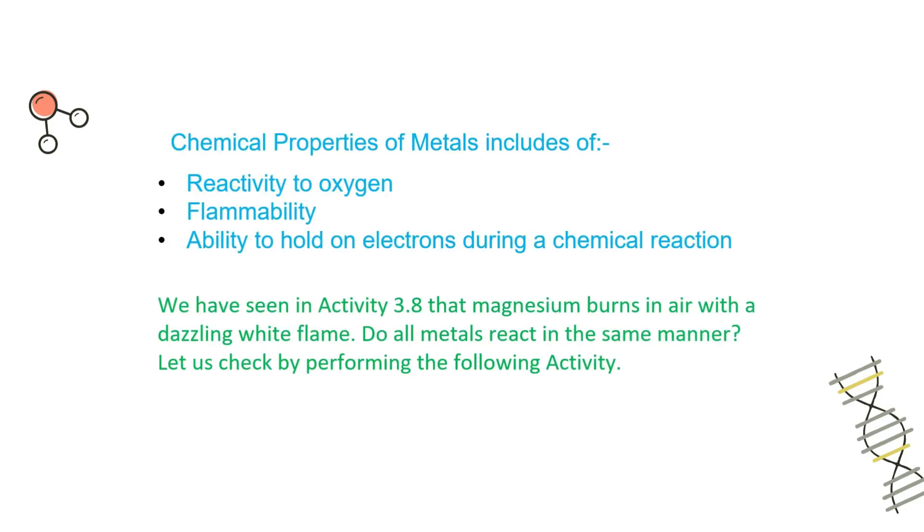Now chemical properties of metals include reactivity to oxygen, flammability, and ability to hold electrons during a chemical reaction. Reactivity to oxygen depends on how a metal reacts with oxygen, does it take a lot of time, does it combine quickly with it, or are there any by-products during the reaction. Flammability means if a metal is inflammable or non-inflammable. The third property is ability to hold electrons during a chemical reaction. So these are the three main traits on which we are going to understand chemical properties of metals.